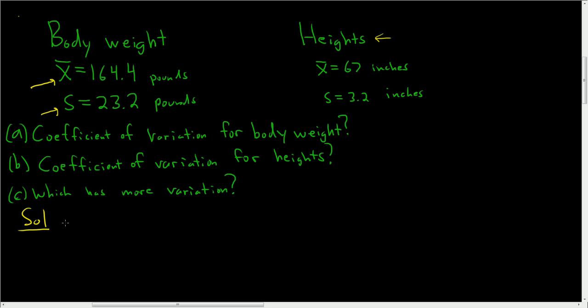The formula for the coefficient of variation, I'm going to call it CV, is the standard deviation S divided by the mean, and then you multiply by 100 and usually express your answer as a percentage. I want to emphasize that I'm not saying multiply by 100%. Don't use the percent key in your calculator. Just multiply by 100 and then write it as a percent.